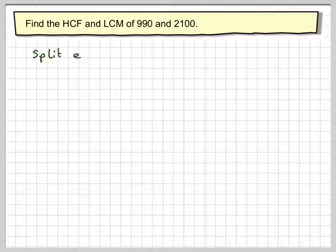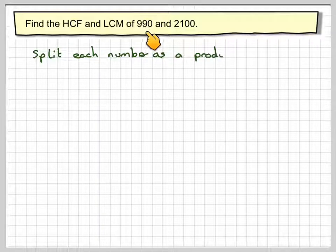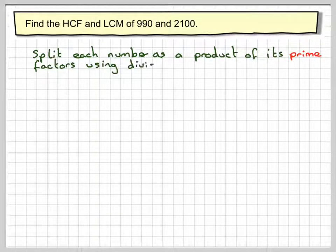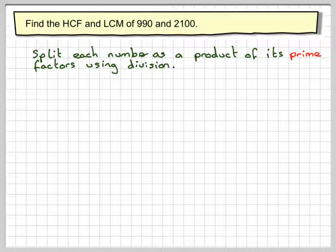Before you can do this, particularly for large numbers, you need to split these two numbers into a product of their prime factors. I'm going to use division but you can use factor trees.